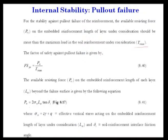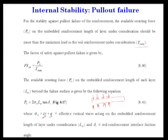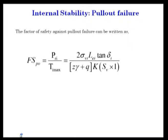The available resisting force PRi on the embedded reinforcement length LEi beyond the failure surface is 2·σVi·LEi·tan(δ), because the reinforcing element has friction on both sides. σVi is the surcharge plus overburden (q + γz), LEi is the effective length, and tan(δ) is the frictional force. So the factor of safety against pullout failure is 2·σVi·LEi·tan(δ) divided by (γz + q)·k·Sv times 1.